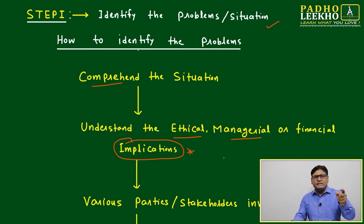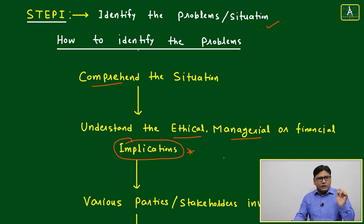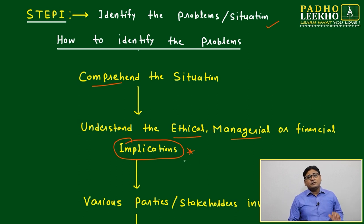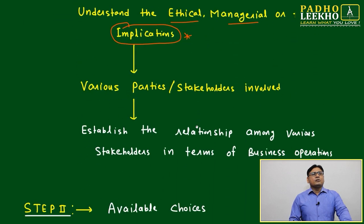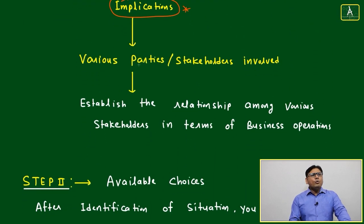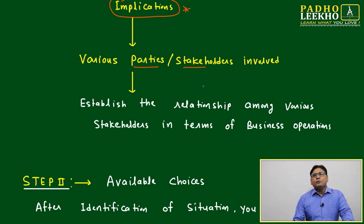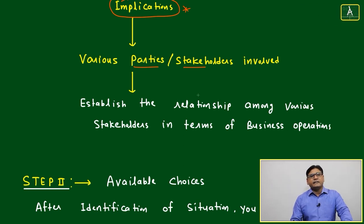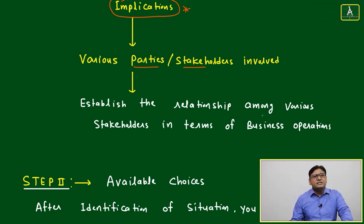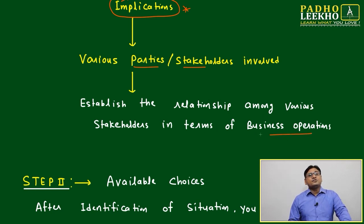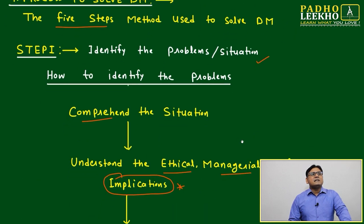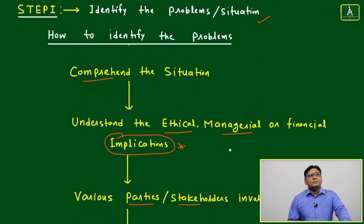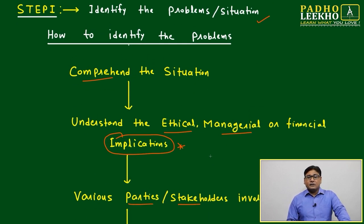If you are going toward a particular course of action, what will be the ethical, managerial, and financial implications? You must identify the various parties and stakeholders involved — who are the stakeholders during the situation or when taking the decision, and how are they going to be affected? Establish the relationship among various stakeholders in terms of business operations. Once you've done this, you'll be able to identify whether the situation is managerial, business, logical, or ethical dilemma level.